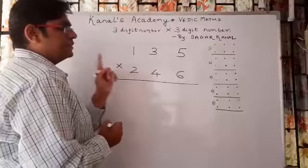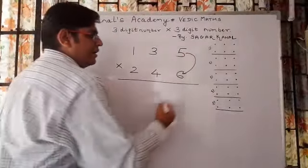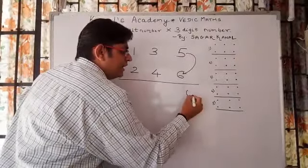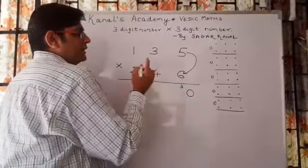First step: 6 times 5 is 30. It's a two-digit number - 0 we write at the base, 3 we carry.